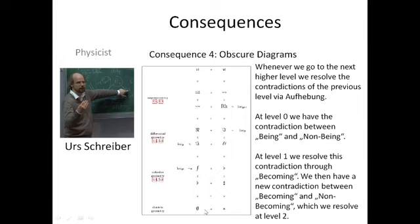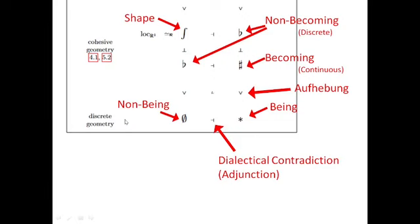Then fourth consequence we have very obscure diagrams. Here we have a diagram explaining the difference between discrete geometry, cohesive geometry, differential geometry and super geometry. And the difference is of course given by dialectical aufhebung. So in discrete geometry we have a dialectical contradiction between being and non-being. This is the lowest level right here. And above that we have the level of cohesive geometry where this contradiction is resolved via Aufhebung. And instead we then have a contradiction between becoming and non-becoming. So let's take a closer look at this diagram.